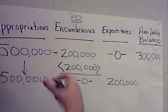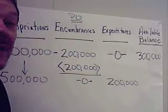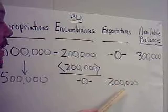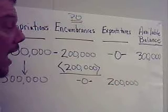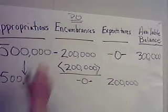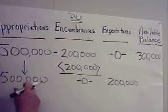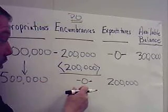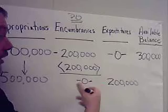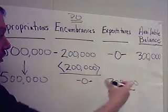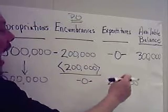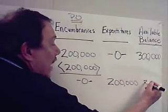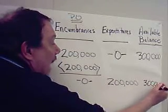Our encumbrance is reduced to $0 because the purchase order has been closed. We realize the expenditure — we may not pay the company yet, but we recognize the expenditure. With our equation: appropriation of $500,000, less encumbrance of $0, less expenditure of $200,000, our available balance will remain $300,000.